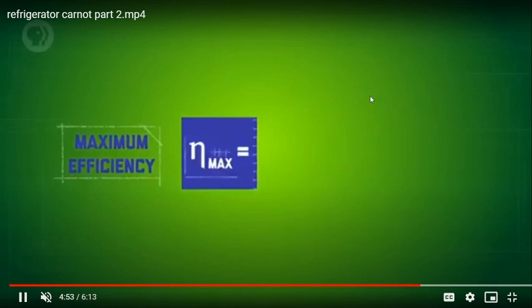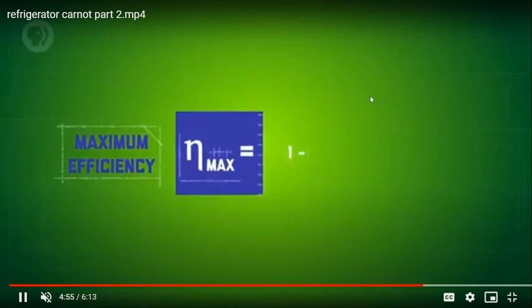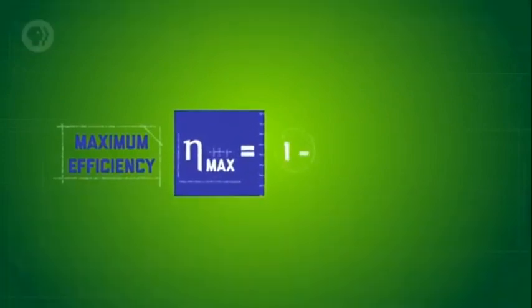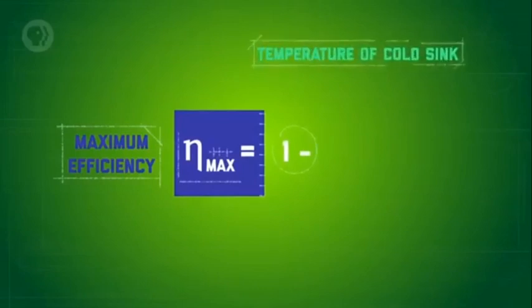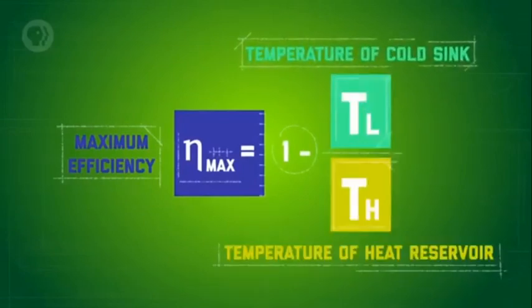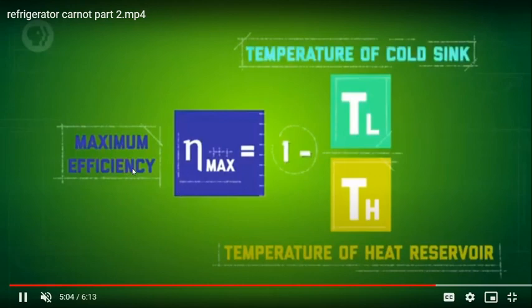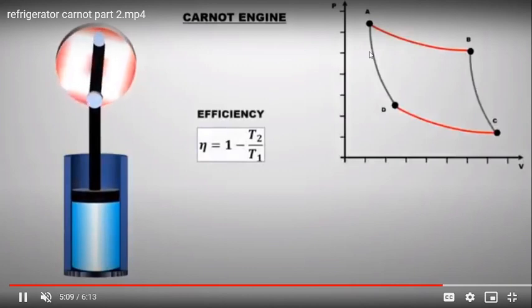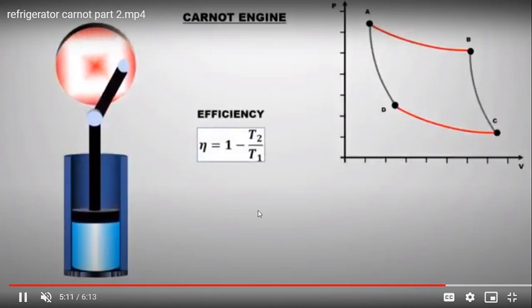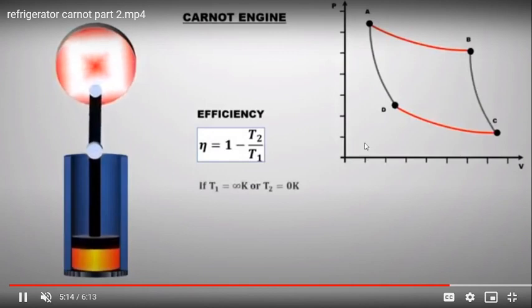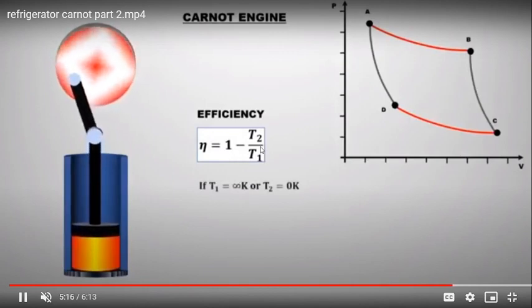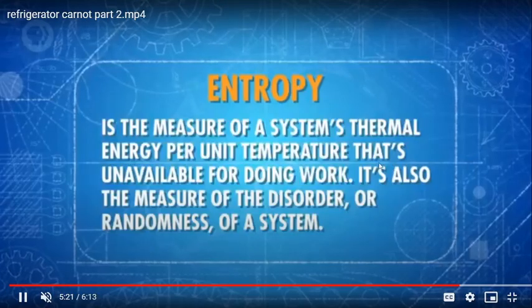To summarize the PV diagram: 1 to 2 is expansion, 2 to 3 is expansion, 3 to 4 is compression, and 4 to 1 is compression. The maximum thermal efficiency of the Carnot engine is: η = 1 − T_L / T_H, where T_L is the low temperature and T_H is the high temperature.